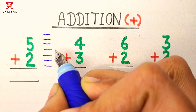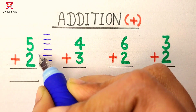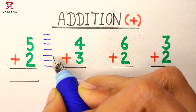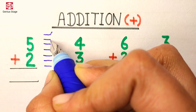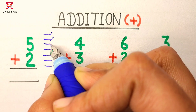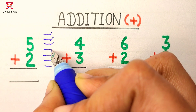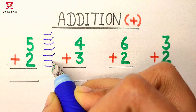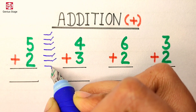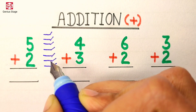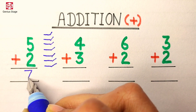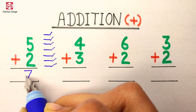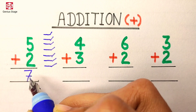Now we will count them all: 1, 2, 3, 4, 5, 6, 7. So the answer to this question is 7.